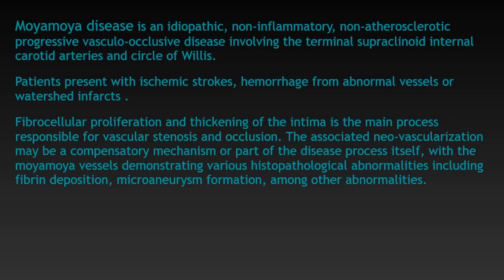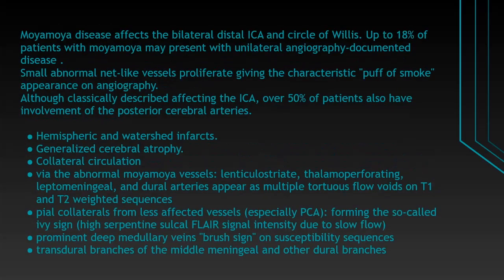The associated neovascularization may be a compensatory mechanism or part of the disease process itself, with Moya Moya vessels demonstrating various histopathological abnormalities including fibrin deposition and microaneurysm formation. Moya Moya disease affects the bilateral distal ICA and circle of Willis. Up to 18 percent of patients may present with unilateral angiographically documented disease. Small abnormal net-like vessels proliferate, giving the characteristic puff of smoke appearance on angiography.